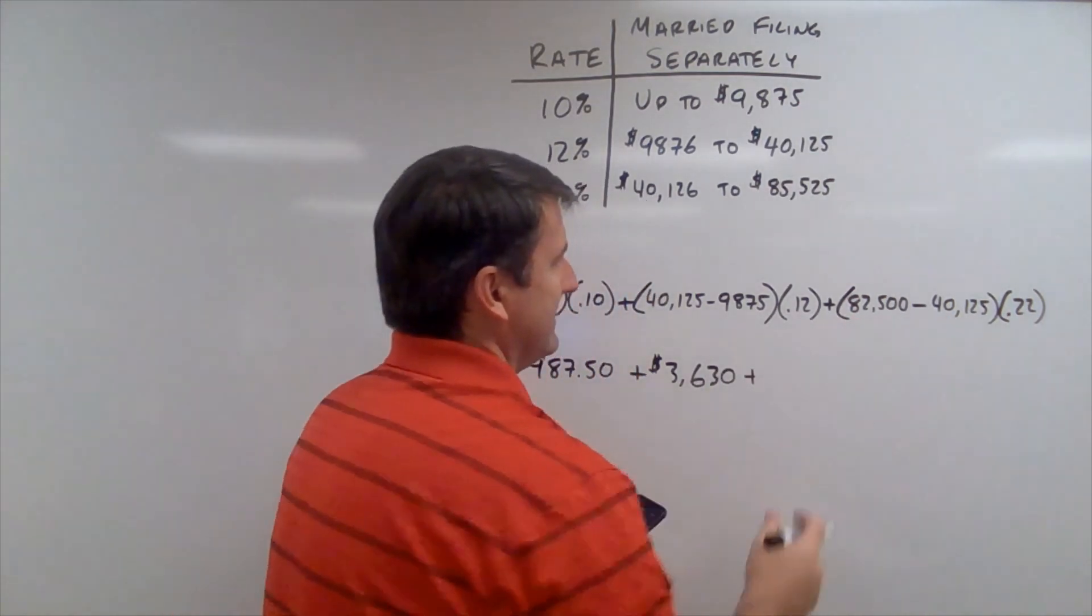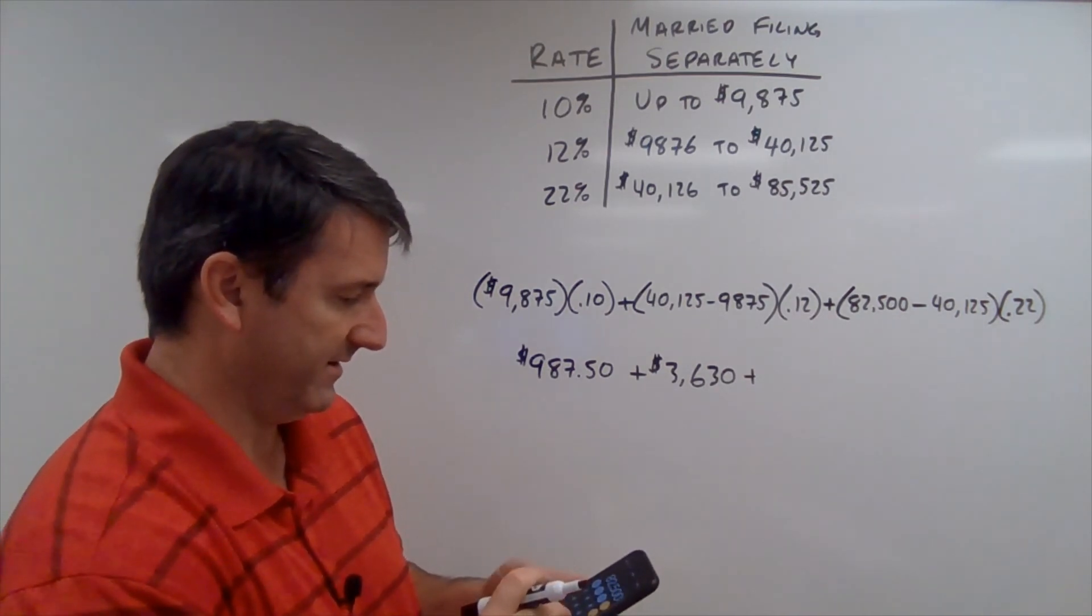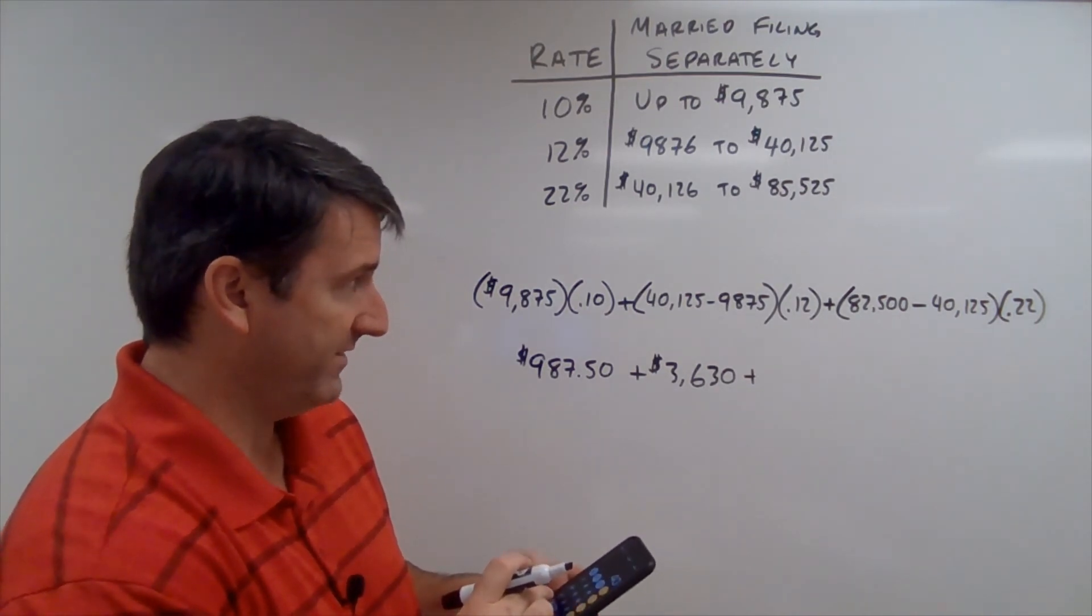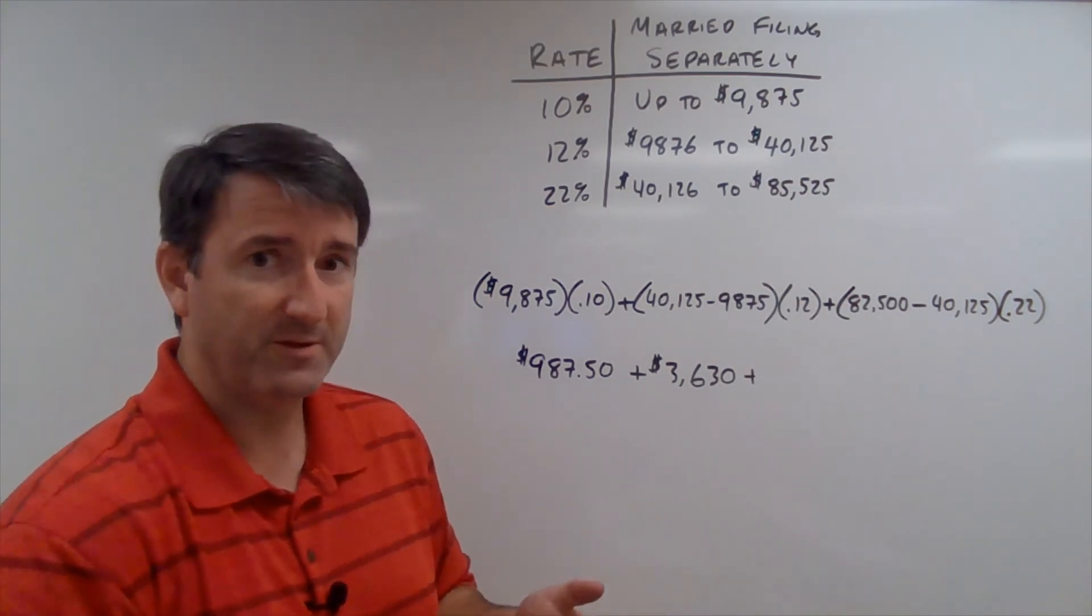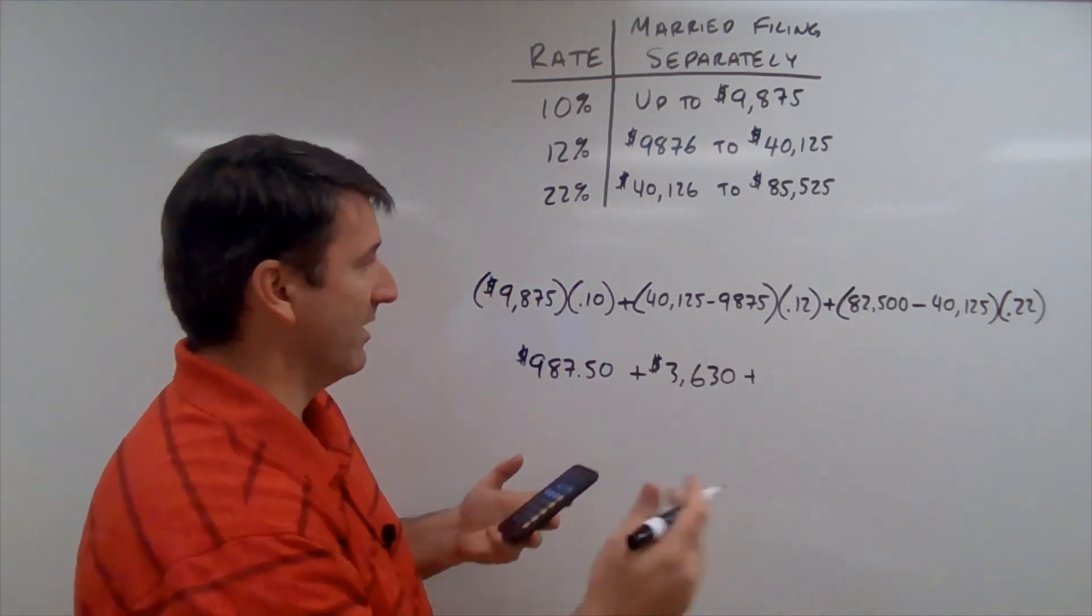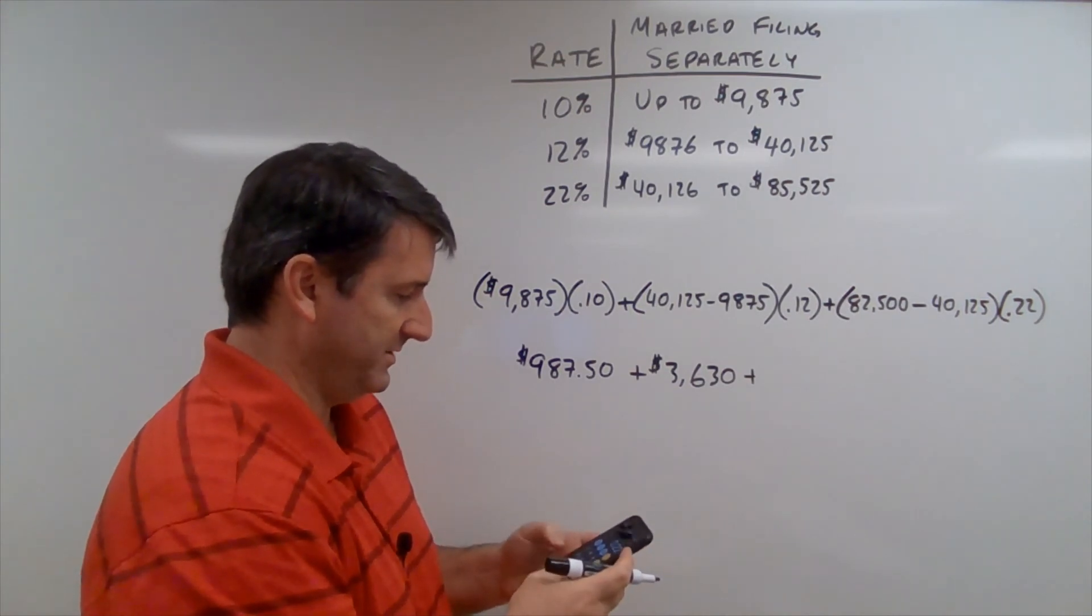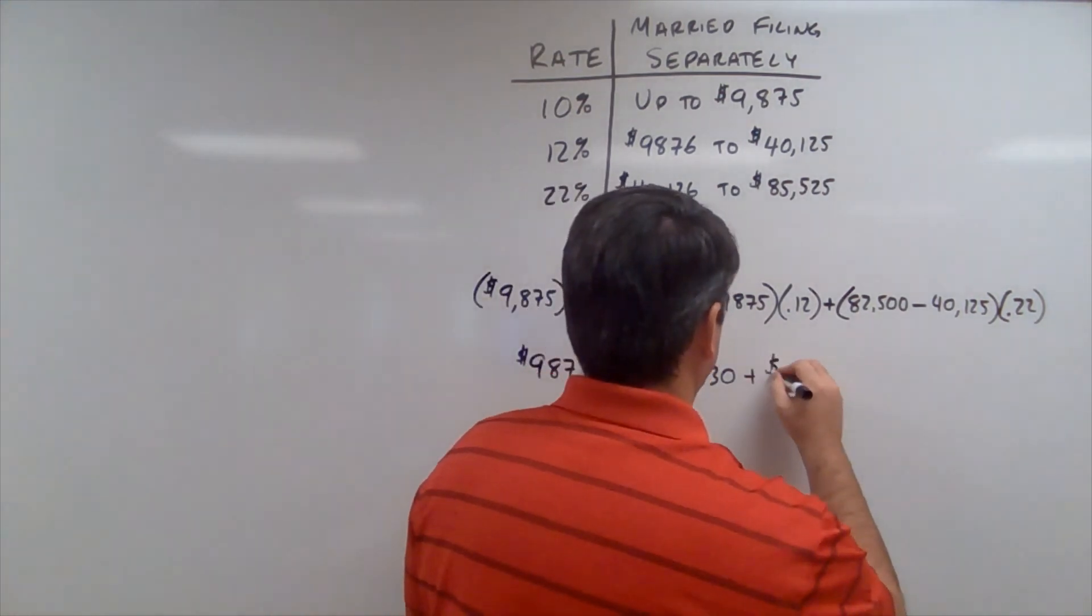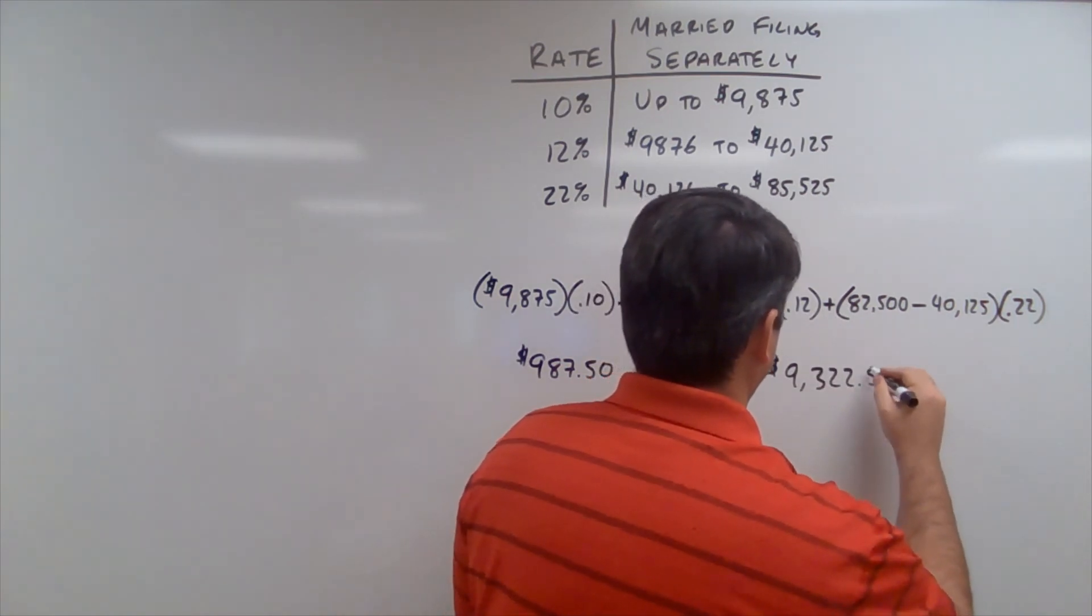And then in this 22% bracket, we've got $82,500 minus $40,125. So, we've got $42,375 in this 22% tax margin. So, we're going to multiply that by .22 and we get a tax of $9,322.50.